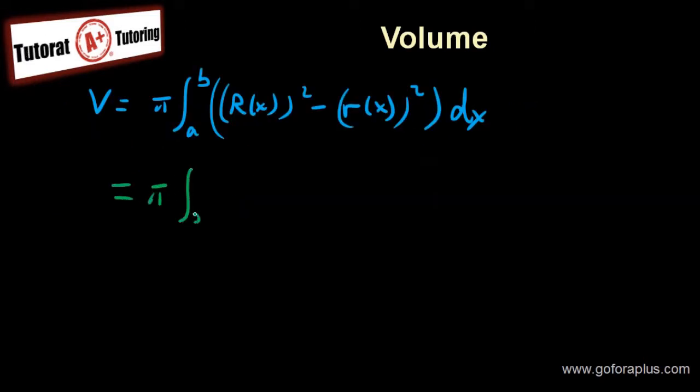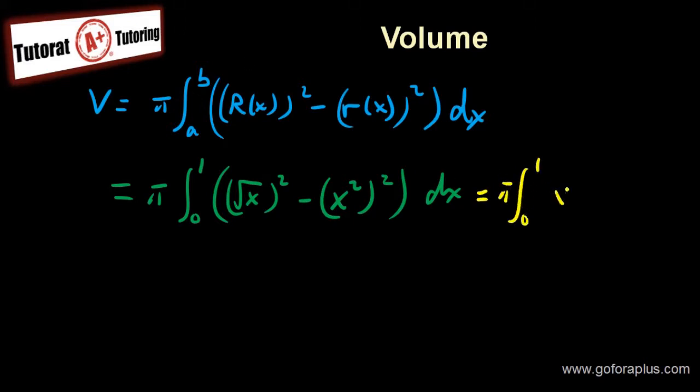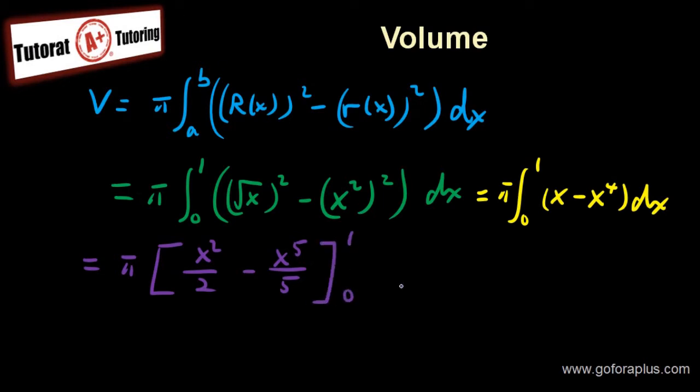Now, replacing this 0 to 1, I have square root of x squared minus x squared squared, this whole thing dx. So this is basically equals to pi integral 0 to 1, x minus x to the 4 dx. Now the integral is becoming pi x squared over 2 minus x fifth over 5. I would just use this as 0 to 1. So there's no plus c because this is a definite integral.